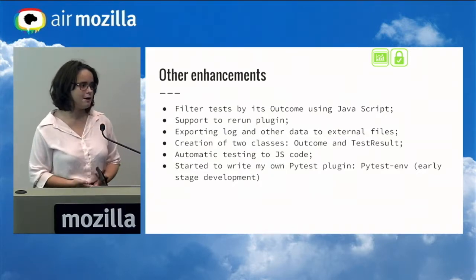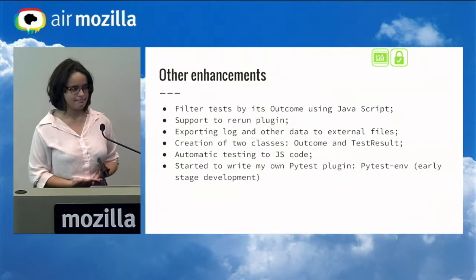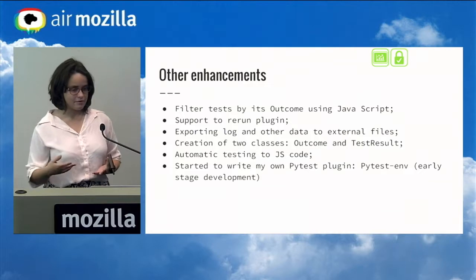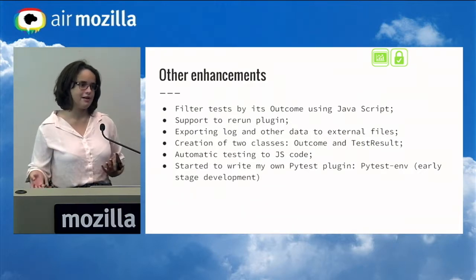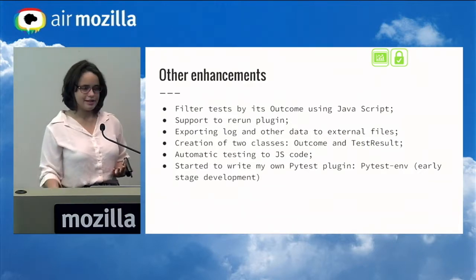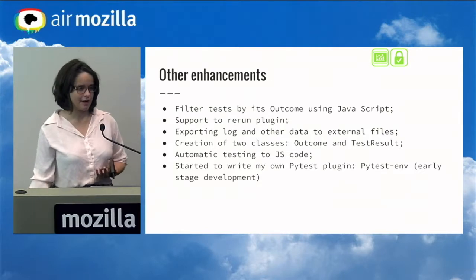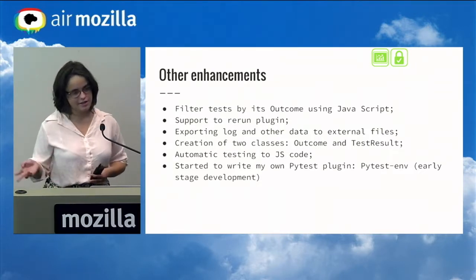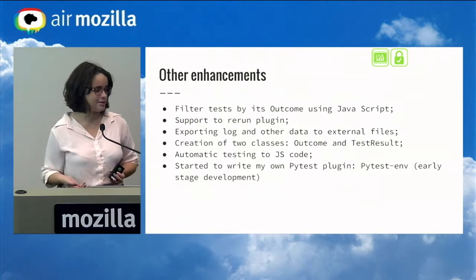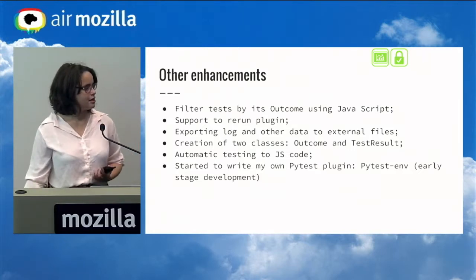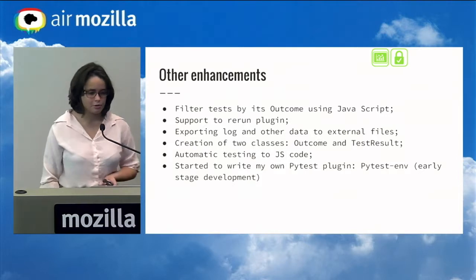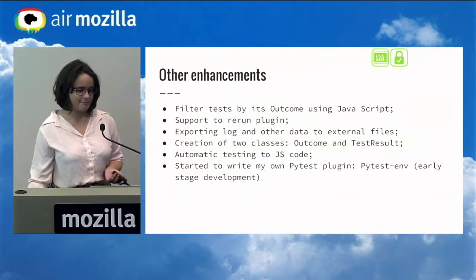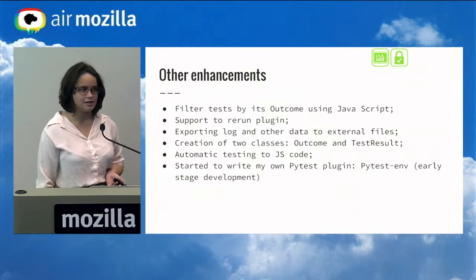We also added support for the re-run plugin. The re-run plugin is a pytest-html plugin that re-runs all the tests that failed. Before, you didn't have support for it, so if a plugin re-ran tests, you could not see that in the report. We added that re-run plugin support. The re-run plugin is used to see flaky tests.